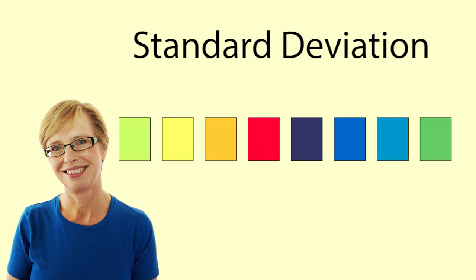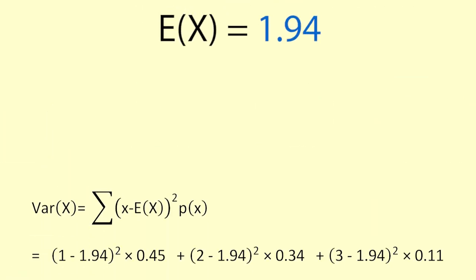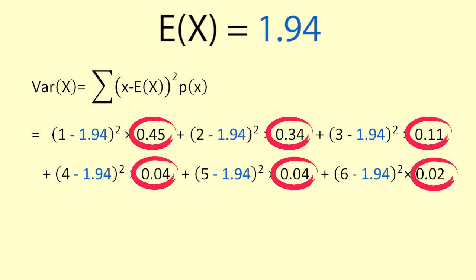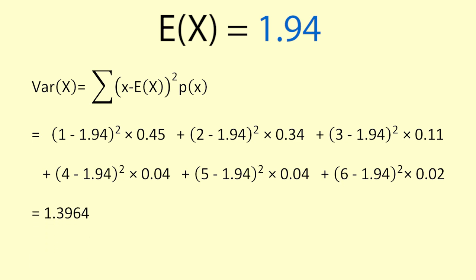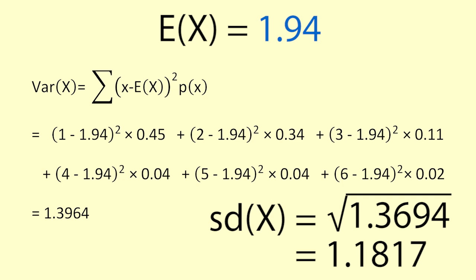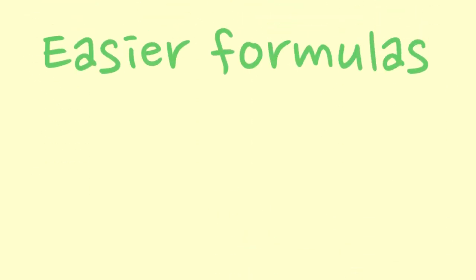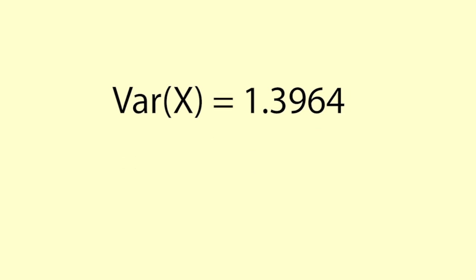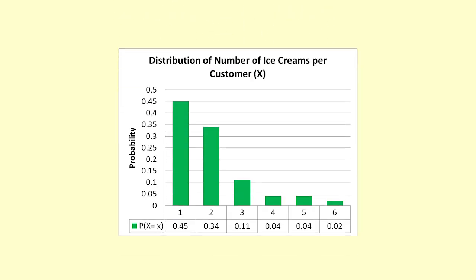You can also calculate the standard deviation of a discrete random variable. Basically, you find the difference between each value and the mean, square it and multiply it by the probability of that value. Then we add them up to get the variance. The square root of the variance is the standard deviation. There are easier formulas as well. The variance for x, the number of ice creams per customer, is 1.3964 and the standard deviation is 1.1817. The standard deviation is a measure of how spread out the distribution is.